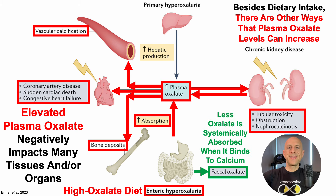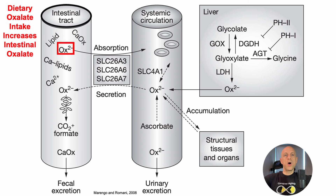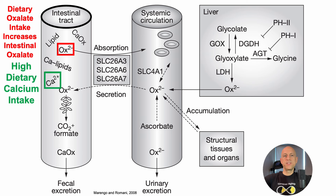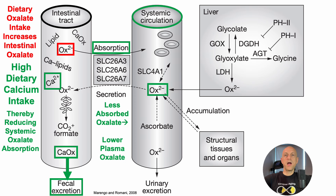The good news is that less oxalate is systemically absorbed when it binds to calcium, and then it's just excreted. We can see this mechanistically in this diagram: dietary oxalate intake increases intestinal levels of oxalate — the oxalate anions OX2⁻ — and in the presence of calcium ions from a high dietary calcium intake, calcium binds to oxalate one-to-one, and we excrete it, thereby limiting oxalate absorption into the bloodstream and potentially limiting accumulation and structural damage to tissues and organs.